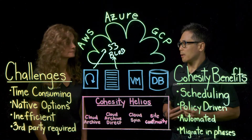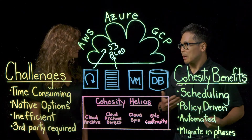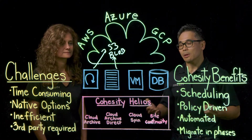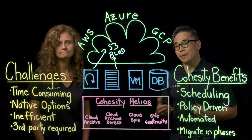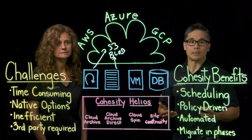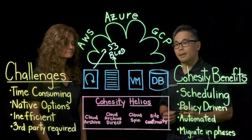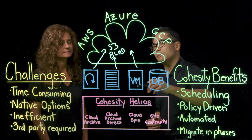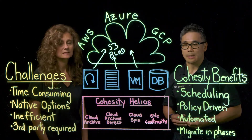Another option we have for customers is how to move workloads, production systems, or applications — a lot of which are running on virtual machines. For that we have Cloud Spin, our product that allows you to take your VMware or Hyper-V VMs and move those to the cloud, converting them to the native formats running on AWS or Azure, for example.